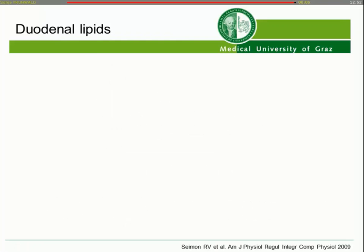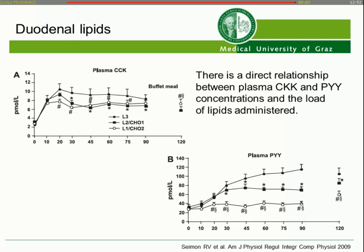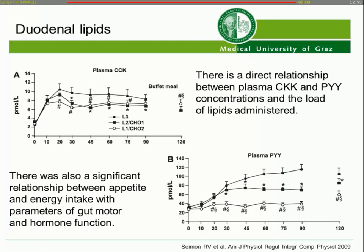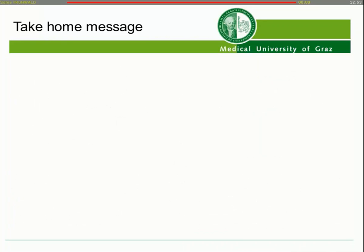Regarding duodenal lipids: the higher the lipid content of the formula, the higher the liberation of inhibitory hormones such as CCK and PYY. PYY is involved in the ileal brake — reduction of transit — to give the gut the opportunity to absorb the applied lipids. There was also a significant relationship between appetite, energy intake, and the lipid content of enteral nutrition.